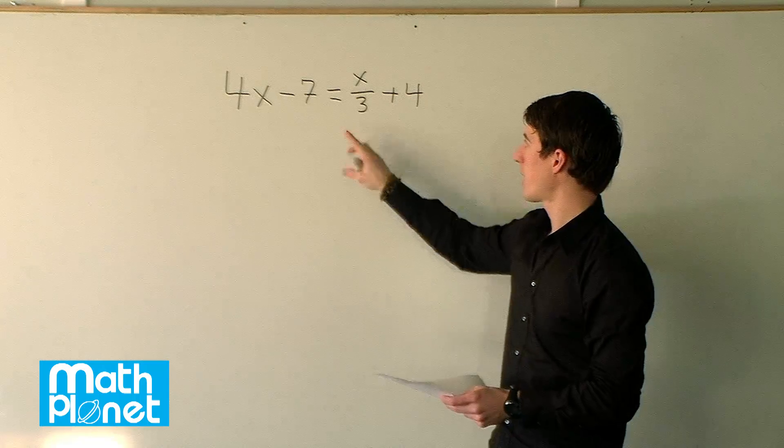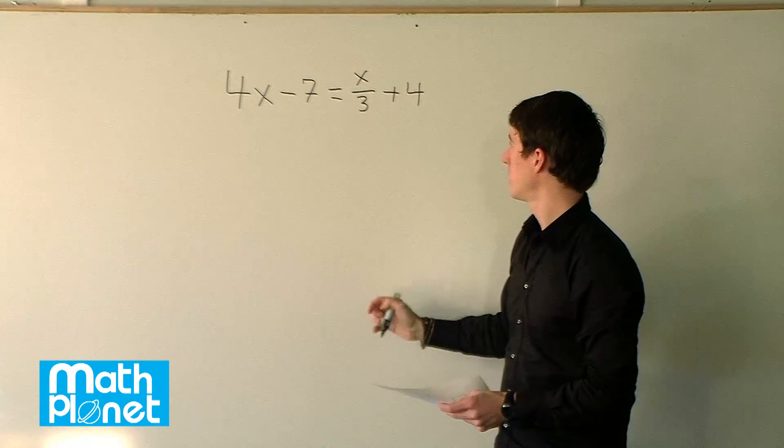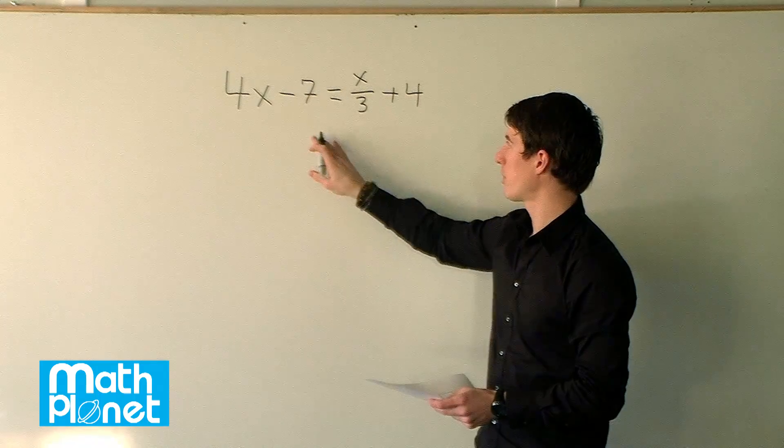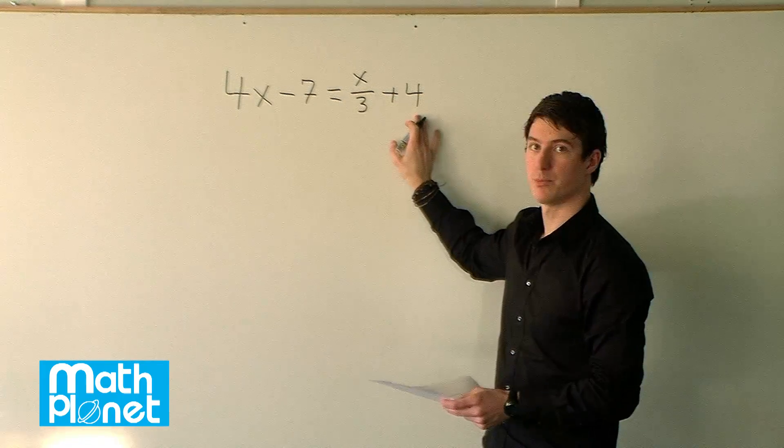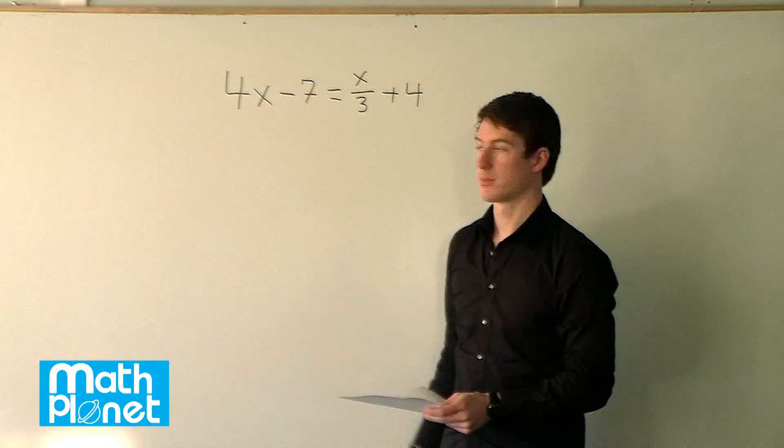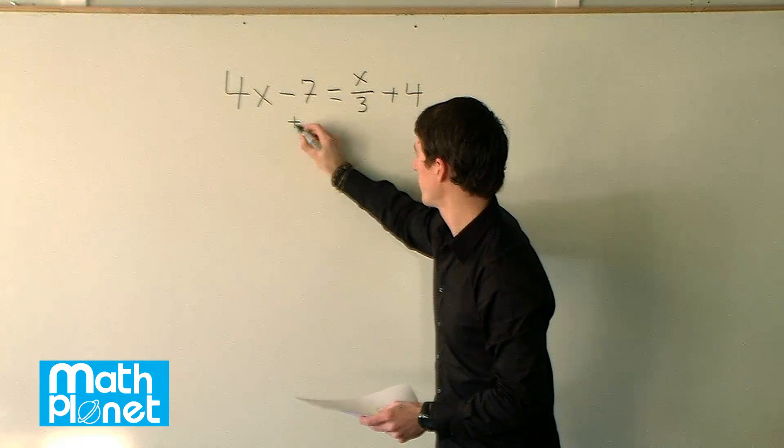We want to combine our number terms and our x terms, so let's begin by putting all of those things on the same side. Let's put the 7 over here and the x over 3 over here. So let's add 7 to both sides.